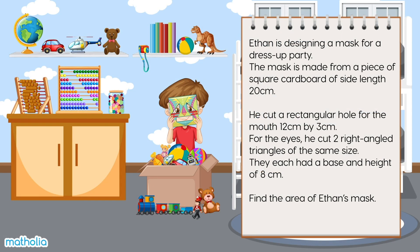Ethan is designing a mask for a dress-up party. The mask is made from a piece of square cardboard of side length 20 centimetres. He cut a rectangular hole for the mouth 12 centimetres by 3 centimetres. For the eyes, he cut two right-angled triangles of the same size. They each had a base and height of 8 centimetres. Find the area of Ethan's mask.